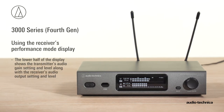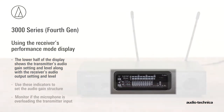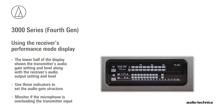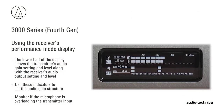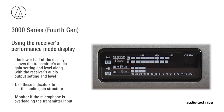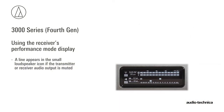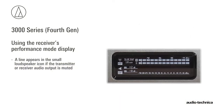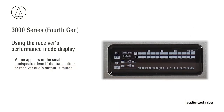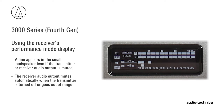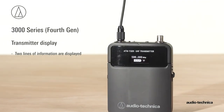The lower half of the display shows the transmitter gain setting and level, along with receiver audio output setting and level. Use these indicators to properly set up the audio signal gain structure and to monitor if the microphone is overloading the transmitter. The small loudspeaker icon serves two purposes: a line appears through it when the transmitter or the receiver output is muted. The receiver output automatically mutes when the transmitter is turned off or goes out of range.